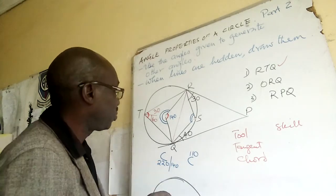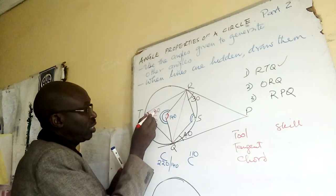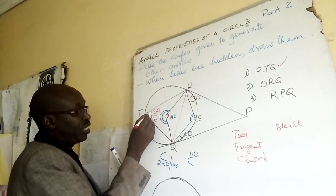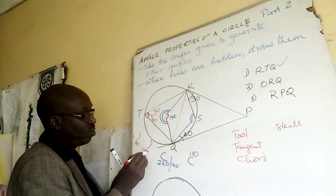See, now this is 140. This is 70 here, this is 70. And at the center it is related to that, so this is 70, this is 140.